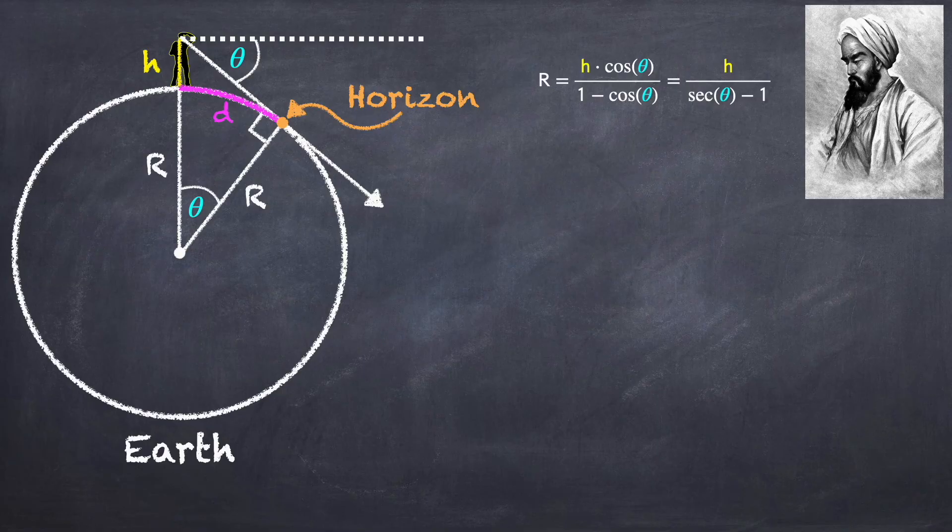You have one experiment that will give you both the radius of the Earth and the distance to the horizon. Well, at least in principle. In practice, it'd be very difficult to do this with one experiment.